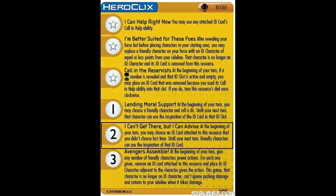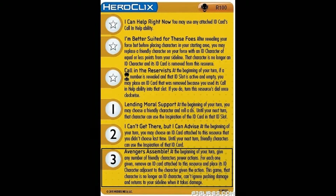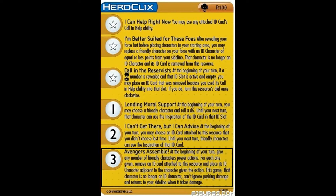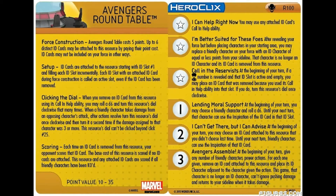On the very last click of the resource is Number 3: Avengers Assemble. At the beginning of your turn, give any number of friendly characters power actions. For each character given an action, you can remove an ID card attached to the resource and place the corresponding character adjacent to any character given the action. For the rest of the game, these characters are no longer ID characters, can't ignore pushing damage, and return to your sidelines when they take damage. This ability has the potential to completely change the tide of battle, but keep in mind that your opponent will score points for any card removed from your resource and will also score your resource if you choose to remove all the ID cards. Also, because your figures return to the sidelines after taking damage instead of being KO'd, your opponent will not score the points of the figures that come in from the resource dial. This resource is slated to be available to anyone participating in the first month of the Avengers Age of Ultron OP event this summer. So if you're wanting to get your hands on this, be sure to call up your local game store, or if you're in the Coppell area of Texas, stop by Rotoplay and reserve your spot as seating will definitely be limited.